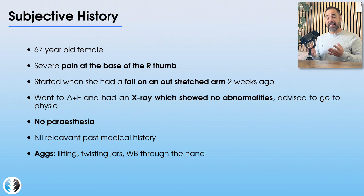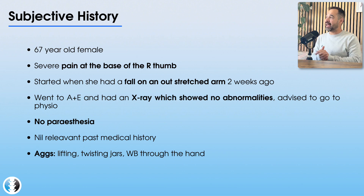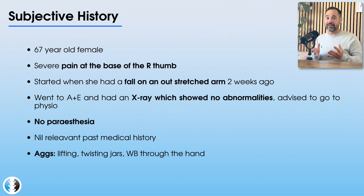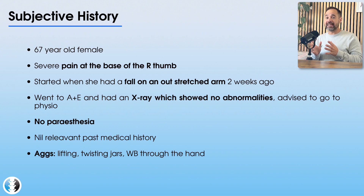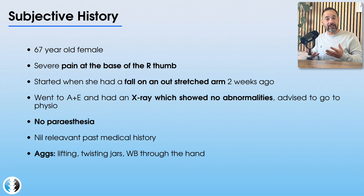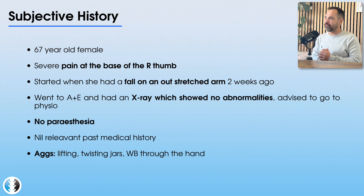So immediately after the fall, she went to the emergency department — she went to A&E — and she had an x-ray of her wrist and hand, which showed no bony abnormalities. As a result, she was advised to try physiotherapy to get things moving. So she presents to us today.